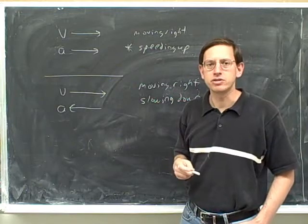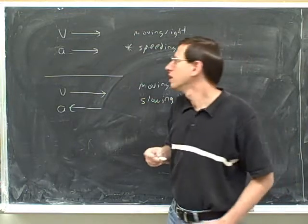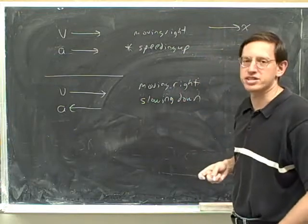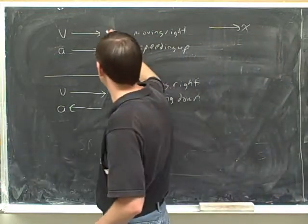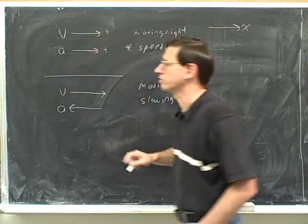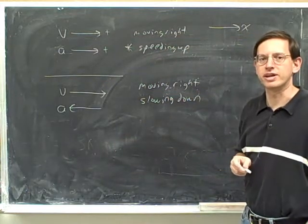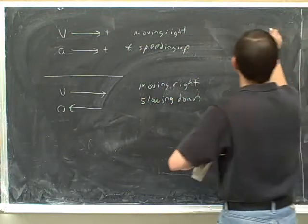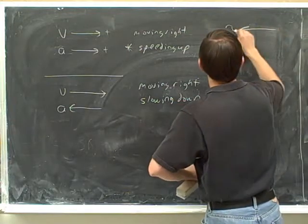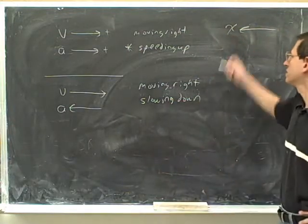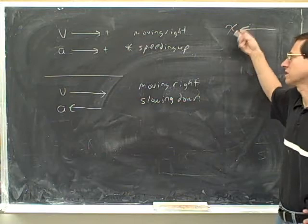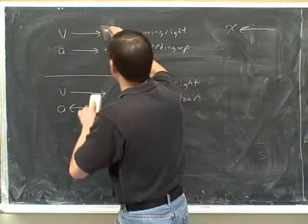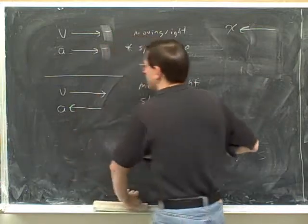It depends on what you chose as your positive direction. If we chose to the right as our positive direction, then the velocity would be positive and the acceleration would be positive, because they're both pointing to the right. But if we chose to the left as our positive direction, then the velocity would be negative and the acceleration would be negative.